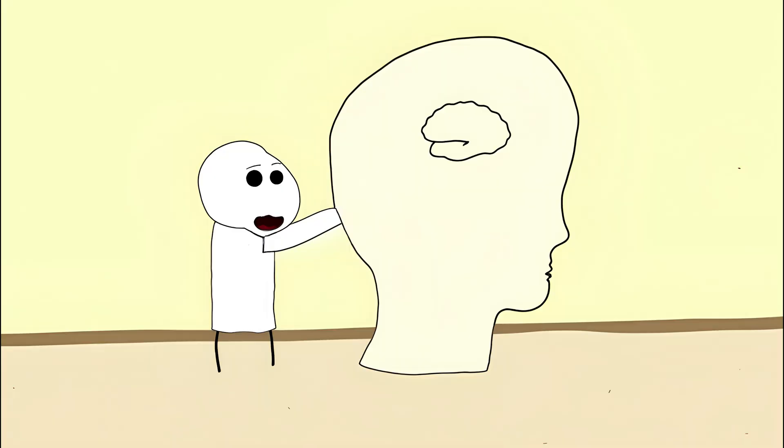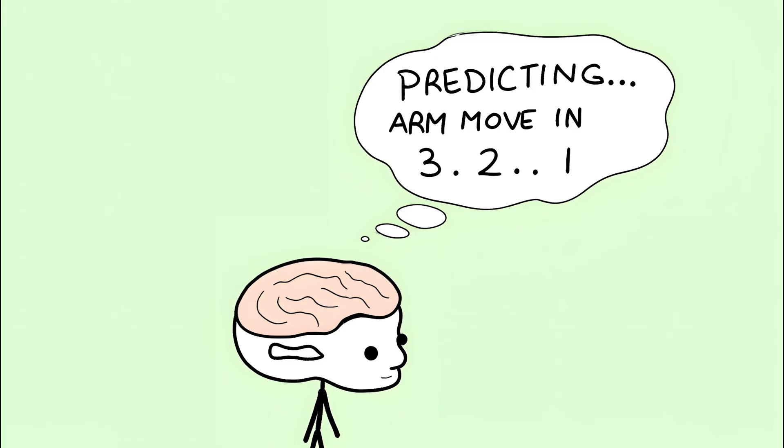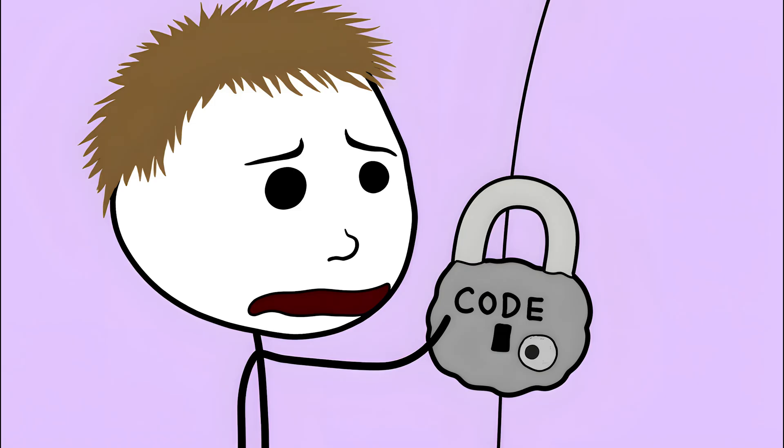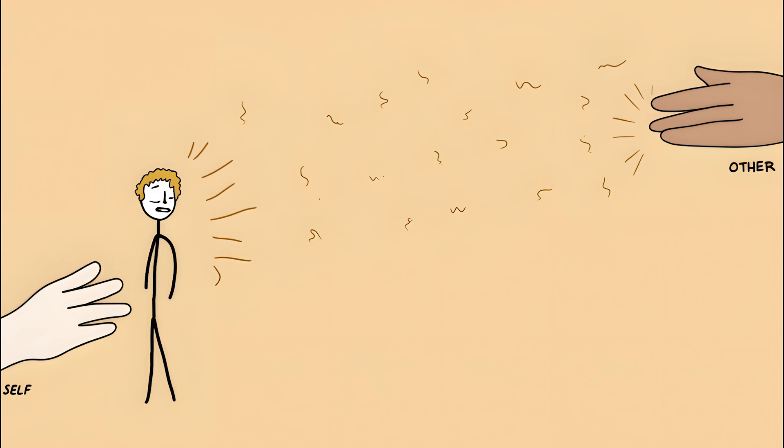Neuroscientists suspect it has to do with your brain predicting your own movements. If you know it's coming, your nervous system calls off the fun. But no one's been able to fully crack the code on how your brain distinguishes your touch from someone else's in a way that totally kills the tickle.